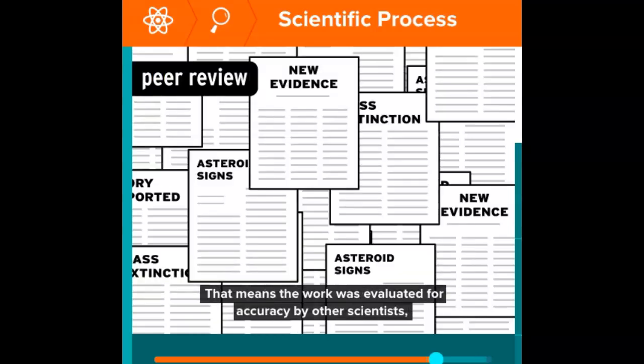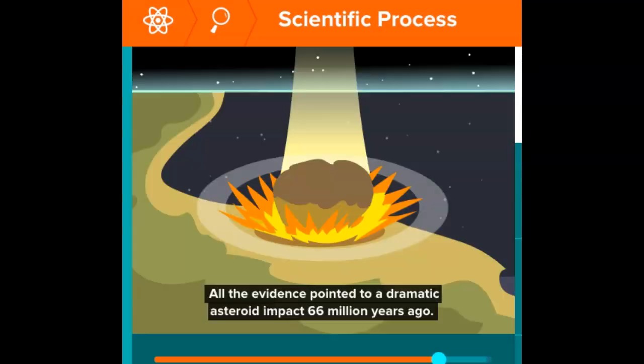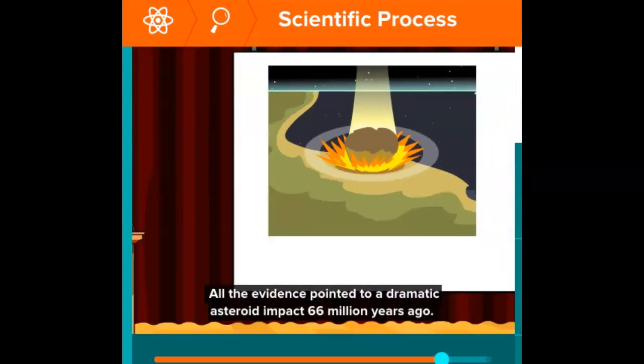In just a decade, they published findings in more than 2,000 peer-reviewed papers. That means the work was evaluated for accuracy by other scientists to make sure it was legit. All the evidence pointed to a dramatic asteroid impact 66 million years ago.